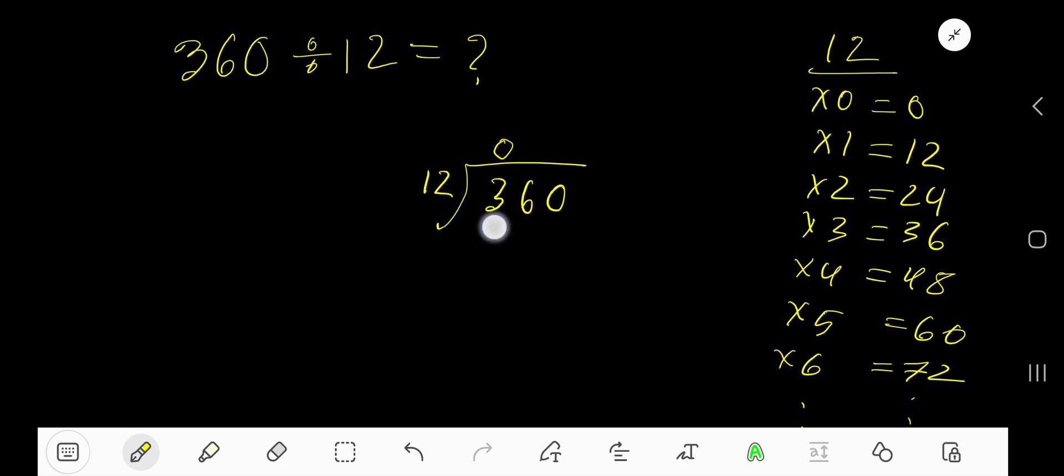0 times 12 is 0. Subtract, bring down this 6. 12 goes into 36 how many times? 12 goes into 36 3 times. 3 times 12 is 36. Subtract 0, bring down this 0.